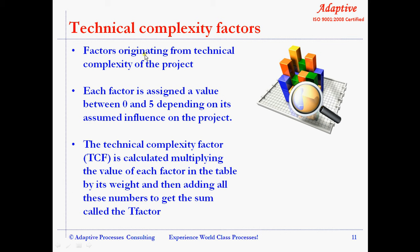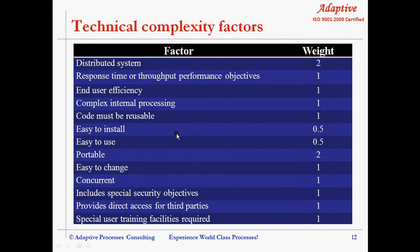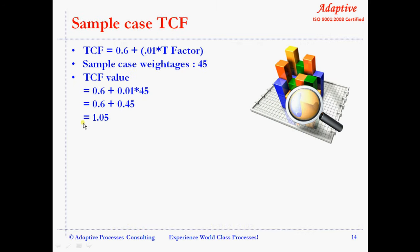Technical complexity factors indicate factors originating from the technical complexity of the project. Each factor is assigned a value between 0 and 5 depending on its assumed influence on the project. The technical complexity factor (TCF) is calculated by multiplying the value of each factor in the table by its weight, adding all these numbers to get the sum called the T-factor. The formula for TCF is: 0.6 plus 0.01 multiplied by the T-factor. The technical complexity factors mostly relate to non-functional requirements such as distributed systems, response time, or throughput performance objectives. For the sample case, TCF is calculated as 1.05 using the formula provided.